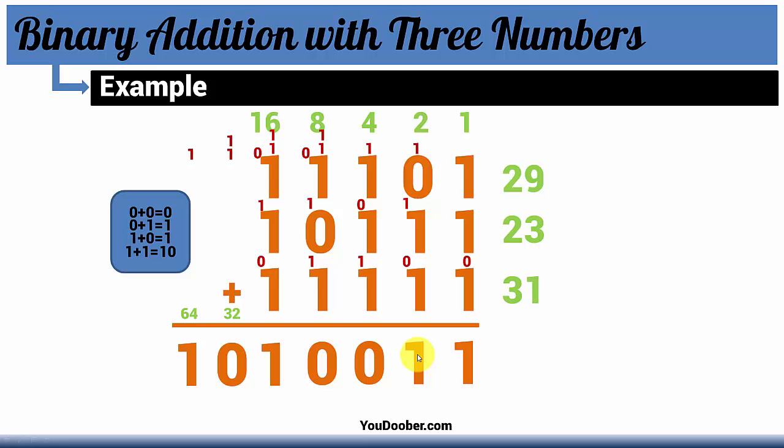64 plus 16 plus 2 plus 1 is 83. 29 plus 23 plus 31 definitely equals 83.